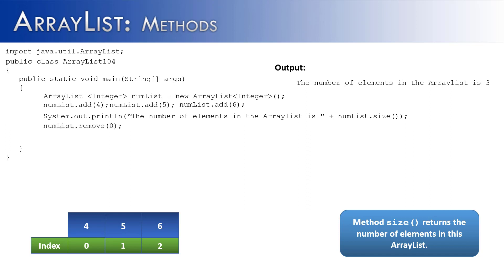Now if I wanted to remove an element, just like we did in the last example, I could go ahead and do that. And then if I was to print out the size of the array, instead of saying 3, it would say 2.